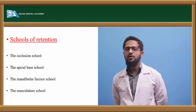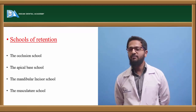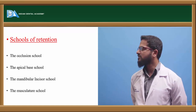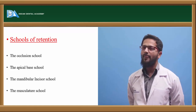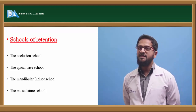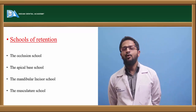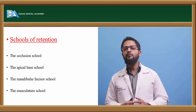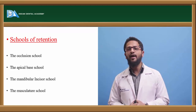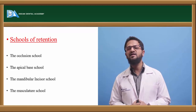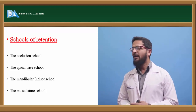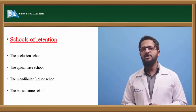The four schools of retention are the occlusion school, apical base school, the mandibular incisor school, and the musculature school. The occlusion school was given by Kingsley, who states that proper occlusion should be achieved and maintained because it is a potent factor in maintaining the stability of a corrected malocclusion.